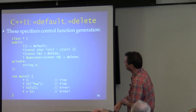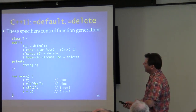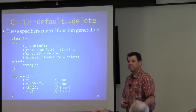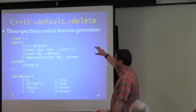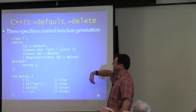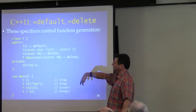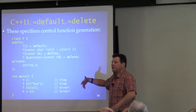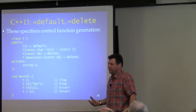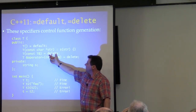Question: how do `= delete` and `= default` affect derived classes? They don't directly, because those are generated functions and they don't inherit. If a derived class tries to call the base and it's not there, you'll get a compile-time error. For example, if the base copy constructor is deleted, the compiler can't generate a copy constructor for the derived class either because it can't call the base class version.